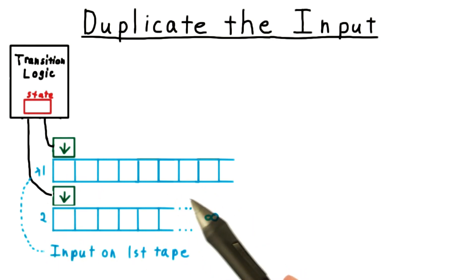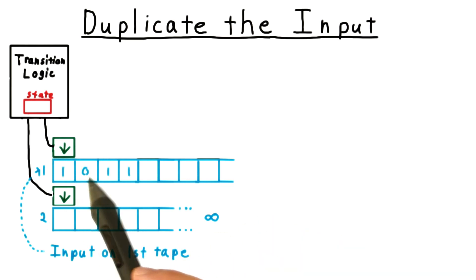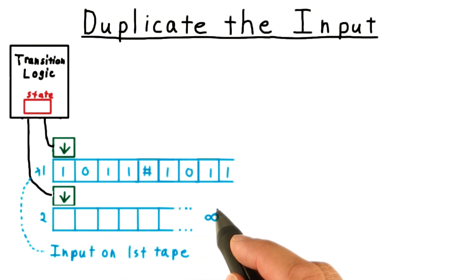Our task will be to duplicate the input separated by a hash mark. So for example, if the input string is 1011, we would want to turn that into that same input followed by a hash, followed by a copy of that same input, 1011.